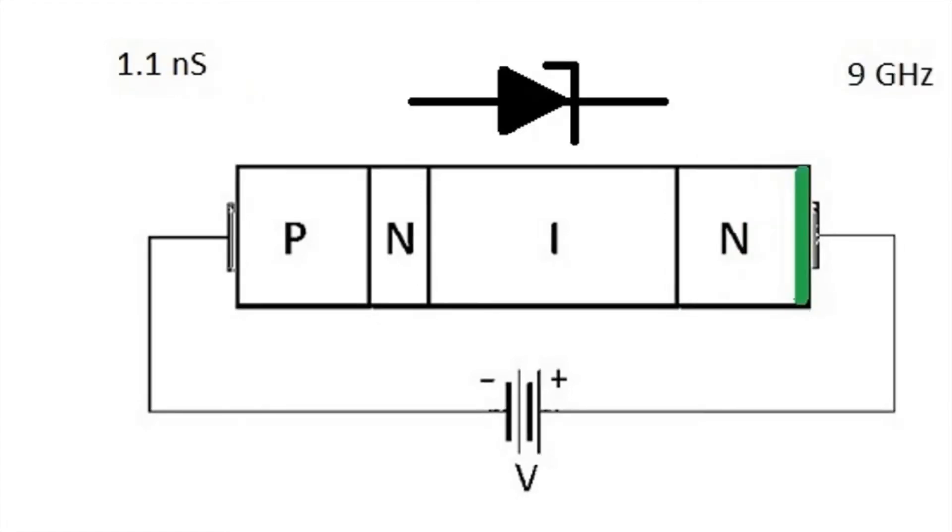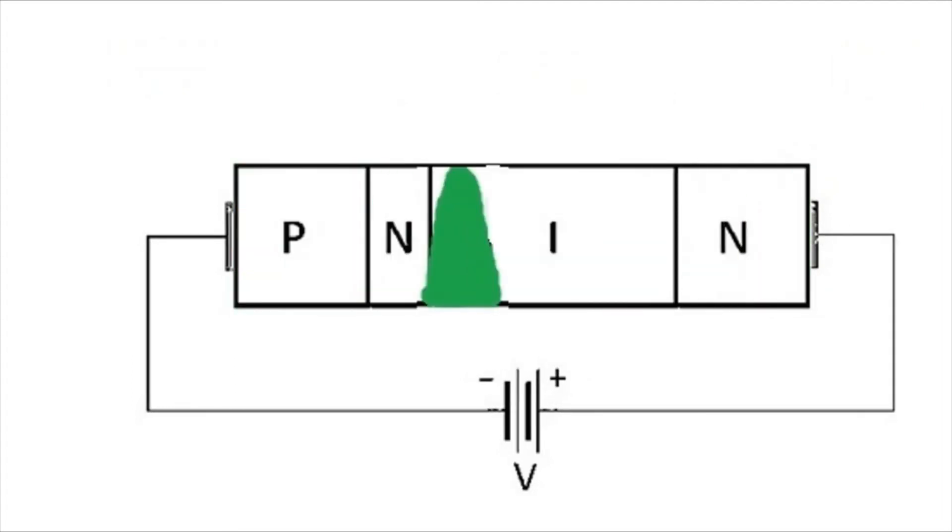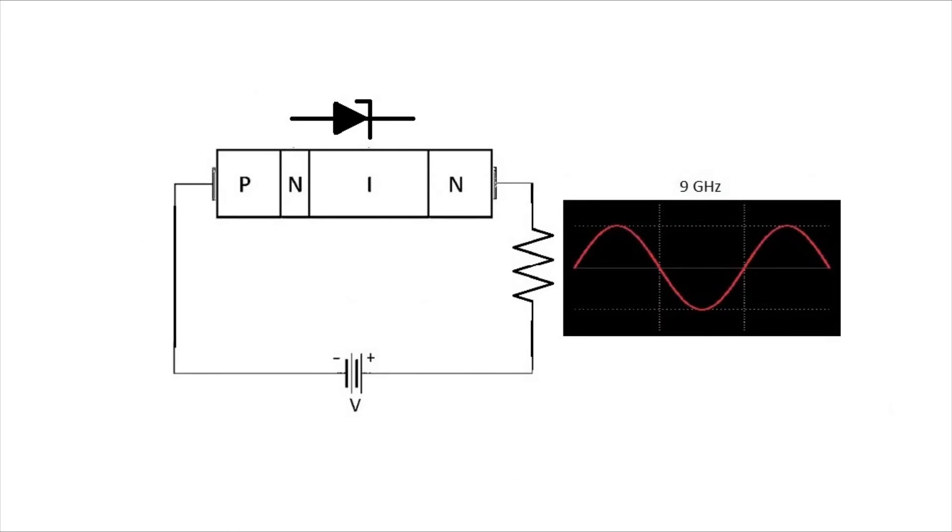This, when repeated, gives us a frequency of about 9 gigahertz. Here we show a proper load resistor and a representation of the sine wave at 9 gigahertz. What do you think will happen if we increase the voltage?